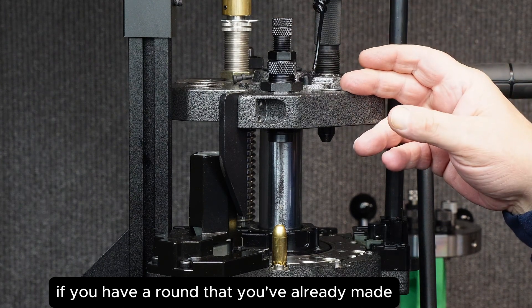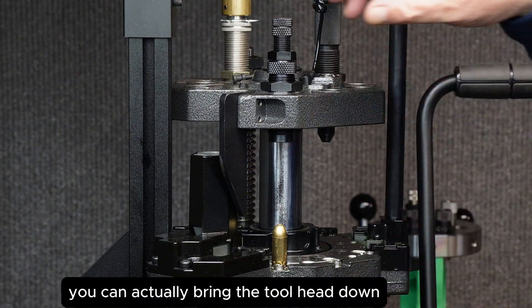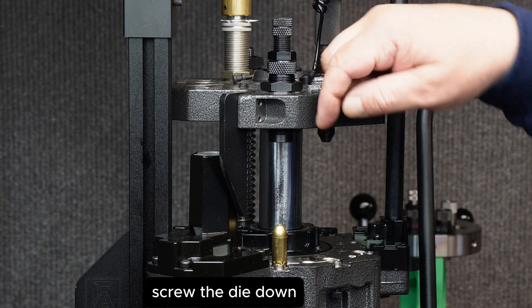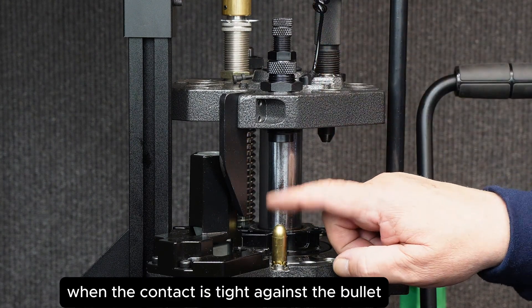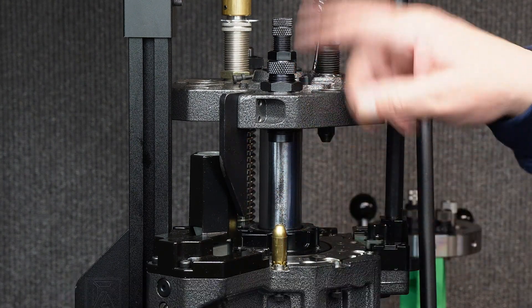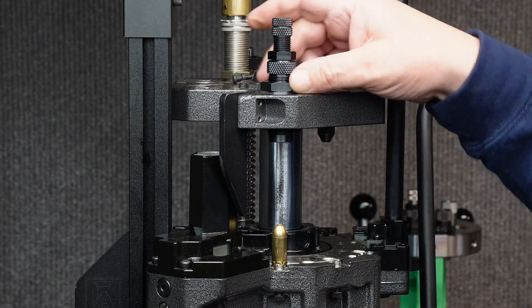If you have a round that you've already made, you can actually bring the tool head down, screw the die down. When the contact is tight against the bullet, lock everything down and you're exactly where you want to be.